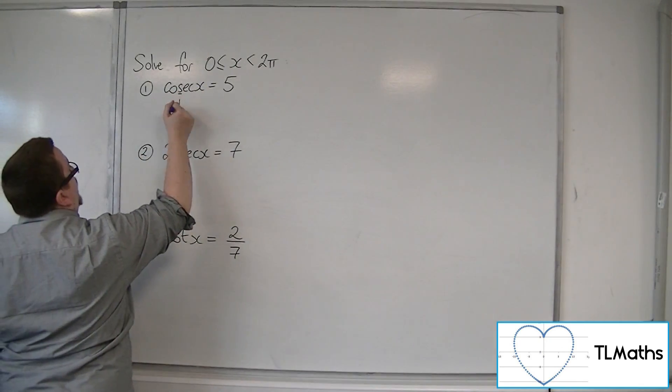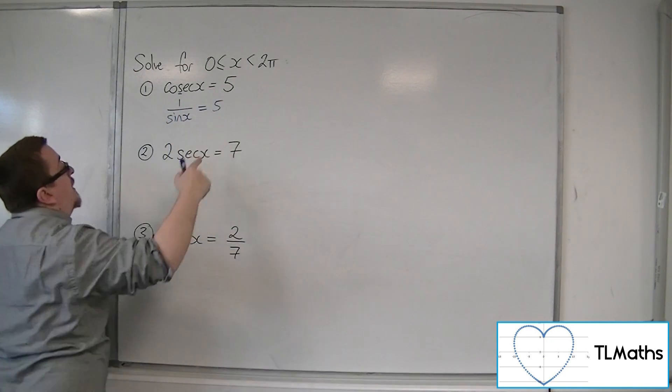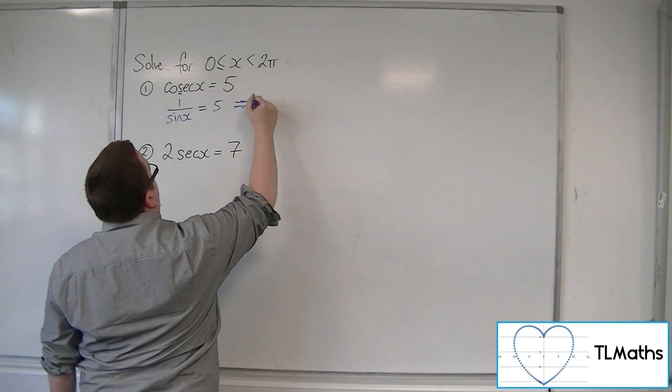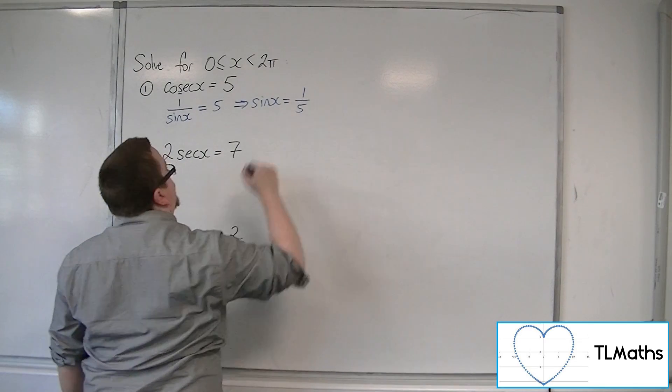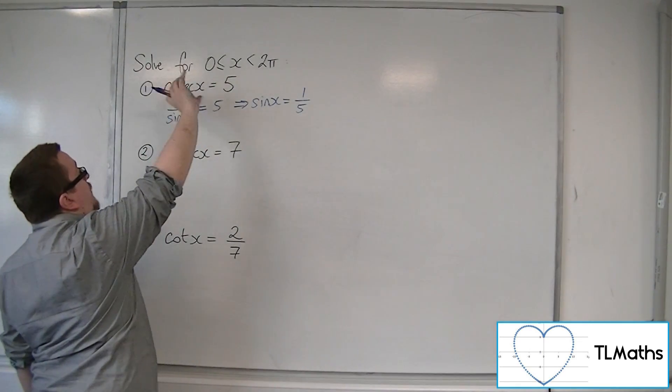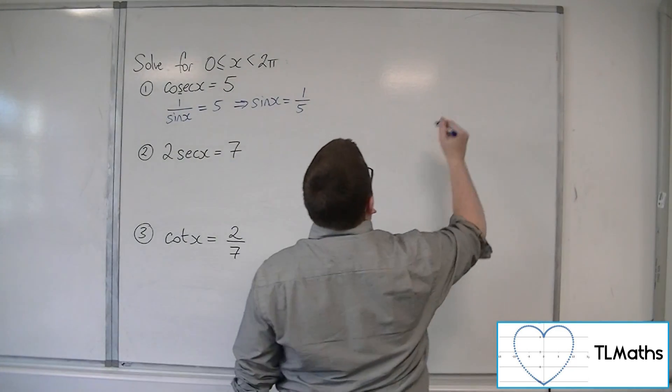So if cosec is 1 over sine, then we're actually solving 1 over sine x is equal to 5. And so we're actually solving sine x is equal to 1 fifth. So if you can flip the left hand side then you can flip the right hand side as well. So sine x is 1 fifth.